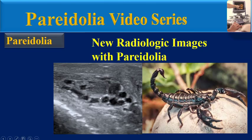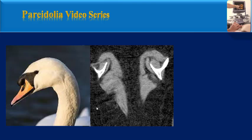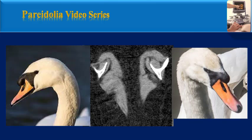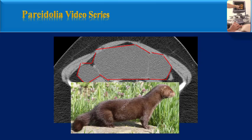Now, new radiologic images with Pareidolia. This coronal CT image from the chest wall — please pay attention to this part which looks like a swan neck. This axial CT image from the pelvic cavity — please pay attention to this part of the image which looks like a wolf.